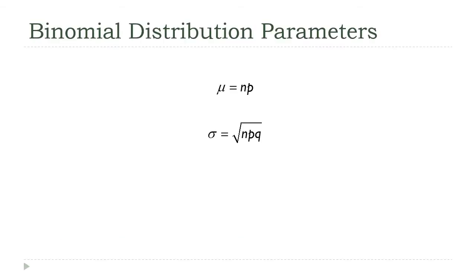So the last thing we need to talk about is how you find the mean and the standard deviation of a binomial distribution. It's just two formulas and I've got them here. They're both fairly straightforward.